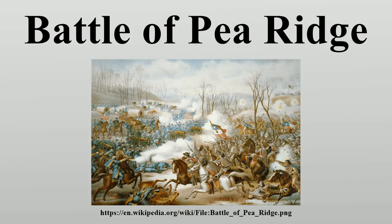Curtis held off the Confederate attack on the first day and drove Van Dorn's force off the field on the second. The battle, one of the few in which a Confederate army outnumbered its opponent, essentially cemented federal control of Missouri and northern Arkansas.